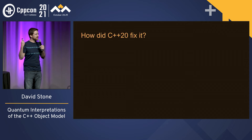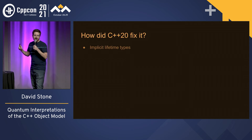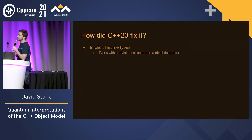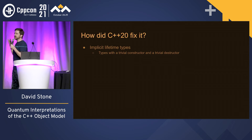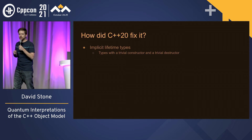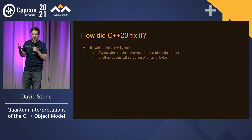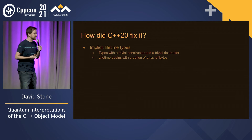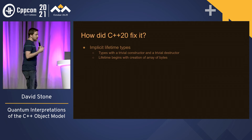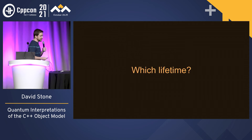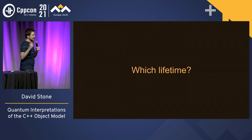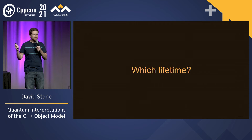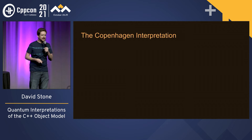This was bad, because it meant it was impossible to implement vector in C++ prior to C++20. So how did C++20 fix this? It added implicit lifetime types — types that have a trivial constructor and a trivial destructor. This means that the lifetime of these implicit lifetime types begins when you create an array of bytes. But which lifetime begins when you create an array of bytes? That's the question — and this is where quantum mechanics comes in.